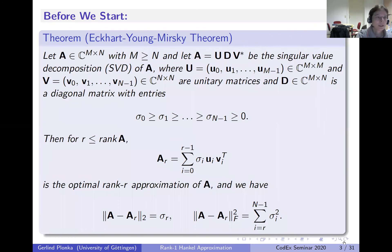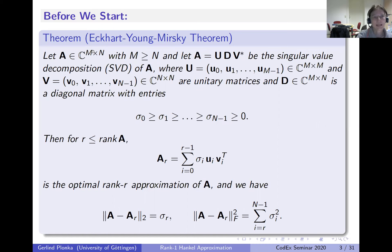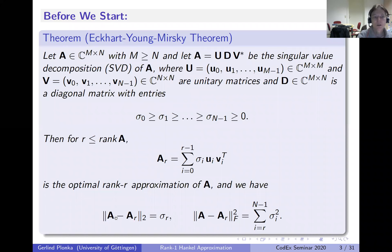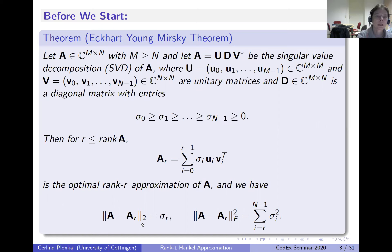Before we start, I'd like to remind you of an important theorem from linear algebra: the Eckart-Young-Mirsky theorem, which tells you how well we are able to approximate with rank R matrices. The best you can do if there is no structure involved is of course what you get from the SVD. You start with a matrix A, which can be rectangular, and take the corresponding SVD with ordered singular values. I always start with sigma zero as the largest singular value.